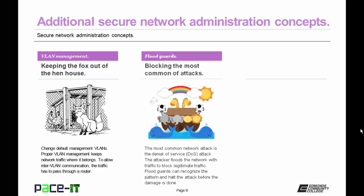Then there are flood guards — this is blocking the most common of attacks. The most common network attack is still the denial of service, or DoS, attack. The attacker tries to flood the network with traffic to block legitimate traffic. Flood guards can recognize the pattern and halt the attack before the damage is done.